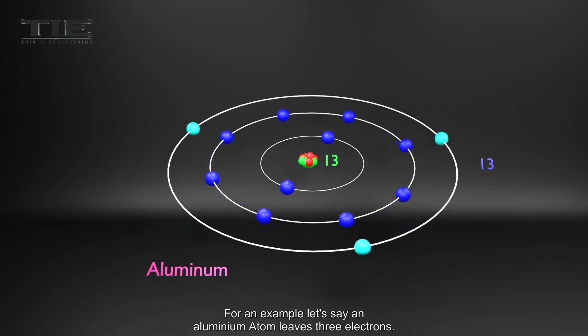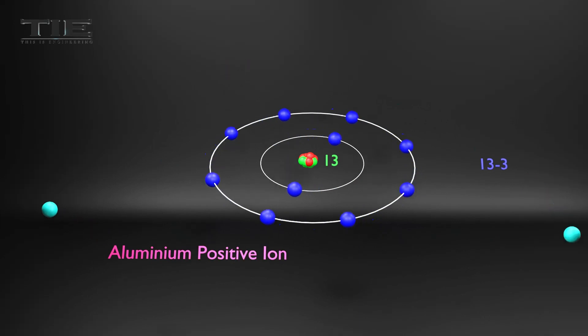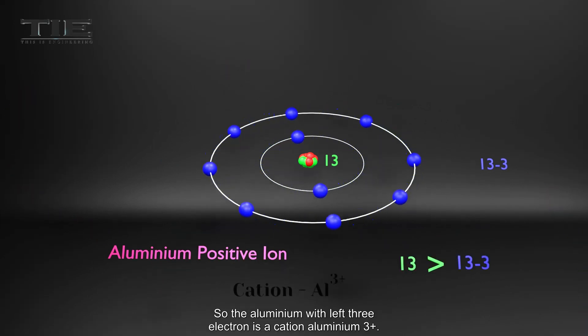For an example, let's say an aluminum atom leaves 3 electrons. So the aluminum with left 3 electrons is a cation, aluminum 3 plus.